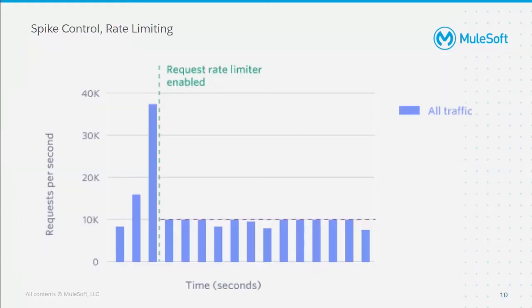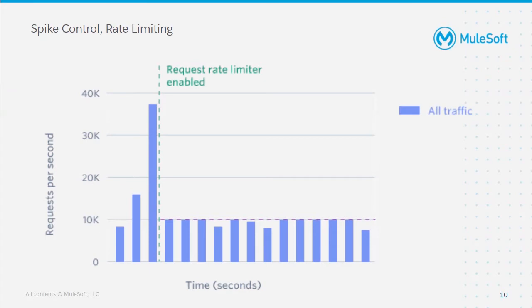Moving ahead with the first policy — rate limiting or spike control. When do we need rate limiting? Suppose if there are a large number of requests during peak hours or sales — applications receive heavy load — or this might be an attempt from a hacker to bring your server down. During load testing, you should identify the maximum threshold value, the maximum load your application can sustain. You can set a limit — say 40k — and if it reaches this limit, whatever requests are received beyond that will be scrapped out.